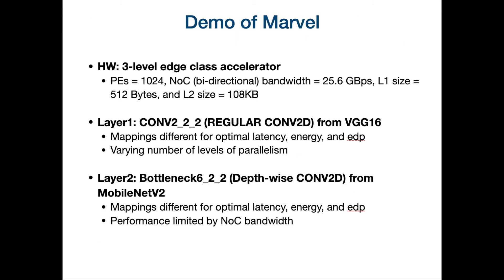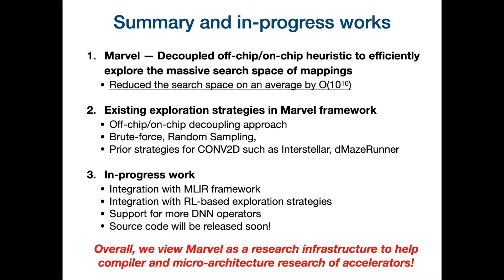Now let us focus on the demo of MARVEL. In this demo, we assume a target accelerator having 1K processing elements, with each processing element having an L1 buffer of 512 bytes and a shared L2 buffer of 108 kilobytes. We consider two layers: a regular Conv2D layer from VGG16, and a Depthwise Convolution layer from MobileNet V2. We use the off-chip and on-chip heuristic model to efficiently explore the massive search space, reducing it on average by an order of 10^10. The MARVEL framework also implements other exploration strategies such as brute force, random sampling, and strategies from existing approaches like Interstellar and Timeloop.